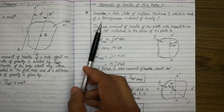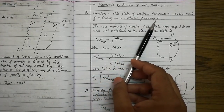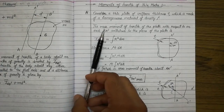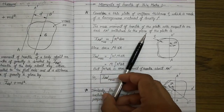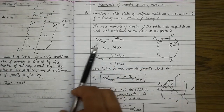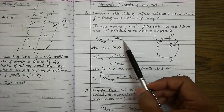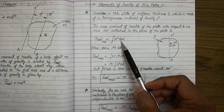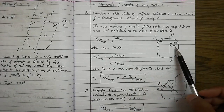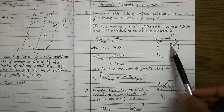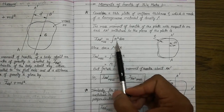Consider a thin plate of uniform thickness t which is made of a homogeneous material of density rho — that is, mass per unit volume. The mass moment of inertia of the plate with respect to an axis AA' contained in the plane of the plate is given by the standard formula. We already know that the moment of inertia of any body equals the integration of the product of the mass of the small element dm into the square of its distance r from the axis of rotation.